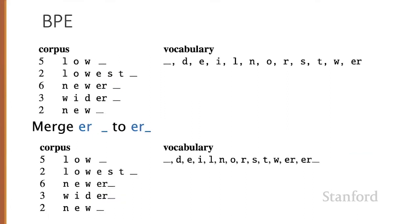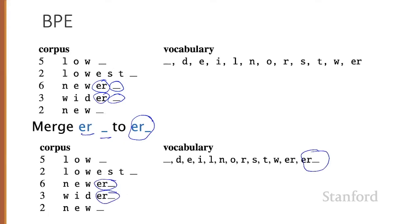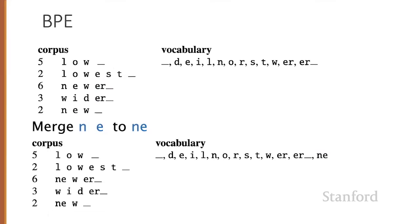The next most frequent pair also occurs nine times: the new symbol ER is now next to the underbar six times in one context and three times in another. So we merge ER next to underbar into a new symbol ER-underbar, add it to our vocabulary, and merge them in the corpus. The next most frequent symbol is N next to E, occurring six times in one context and two times in another for a total of eight times. So we merge N next to E into a new symbol NE, add it, and merge in the corpus.